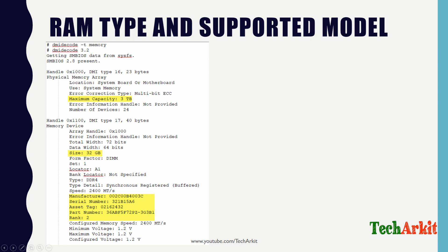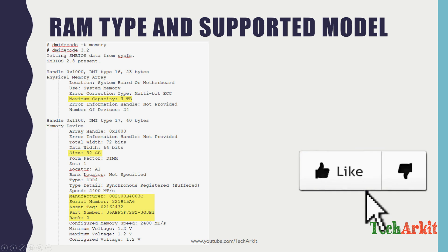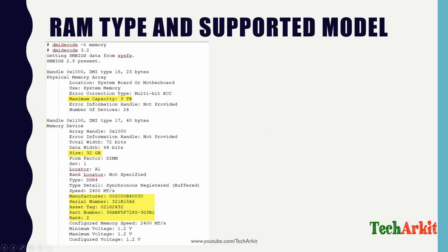To check the supported RAM model and maximum capacity, use the command: dmidecode -t memory. This shows the maximum capacity — for example, 3 terabytes for this server. It also shows currently installed RAM modules, such as 32 GB modules, along with their location, manufacturer, asset and part numbers, rank factor, type (DDR4), and speed. This provides very detailed information for hardware verification.